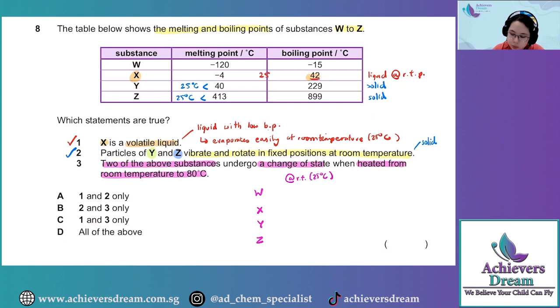W would be a gas because 25 is above its boiling point. X would be a liquid because 25 is between its melting and boiling point. And as we have established in statement 2, Y and Z would be solids.